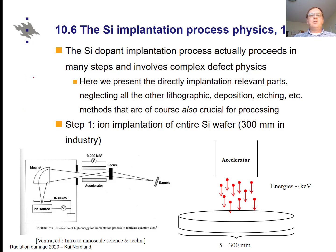In the final part of the course we discuss in some fairly good detail what happens when you implant semiconductors. As mentioned many times, this is money-wise by a good margin the most important radiation effect, because the manufacturing of semiconductors for computers and mobile phones is a huge industry. The ion implantation part can be estimated to be a multi-billion dollar industry per year worldwide.